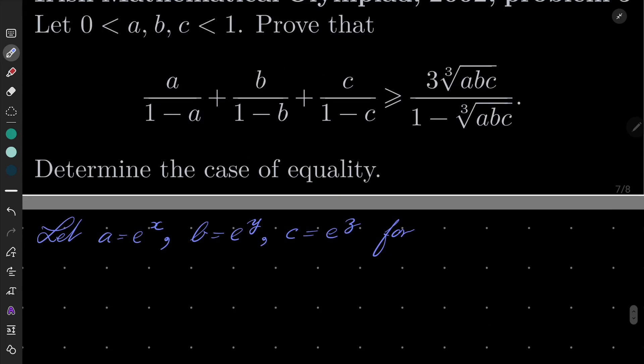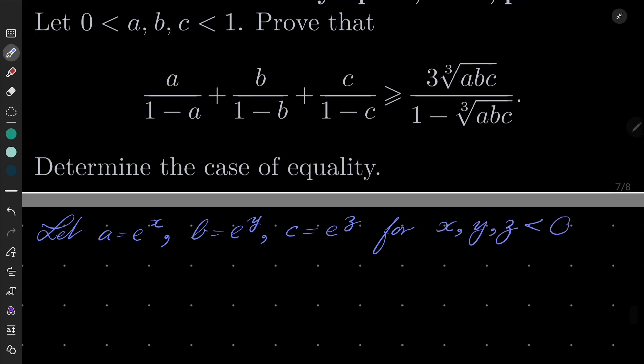Well, since they are bigger than 0, this substitution works, and since they are less than 1, we know that exponential function is less than 1 on the interval minus infinity to 0. So we know that x, y and z are negative numbers.